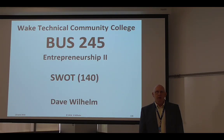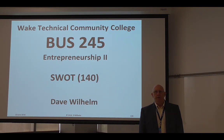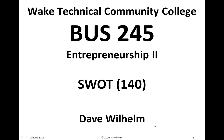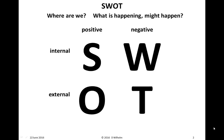I'm Dave Wilhelm. In this video, we discuss the SWOT section of the Business 245 business plan. SWOT analysis attempts to answer the questions: where are we, what is happening, and what might happen? There are four elements of SWOT analysis.